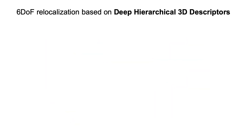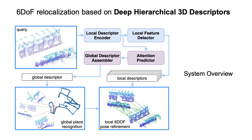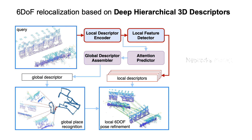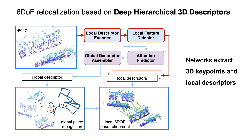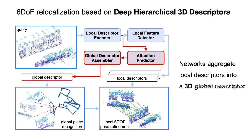We propose a hierarchical network which consumes raw 3D points and performs local feature detection, description, and global descriptor extraction in one single path. The network first extracts 3D local descriptors and key points in a describe-and-detect approach. The global descriptor is then aggregated from the local features with an effective attention mechanism.